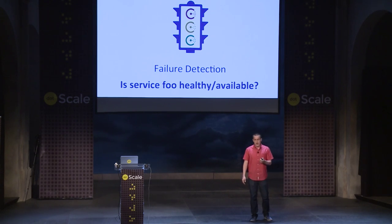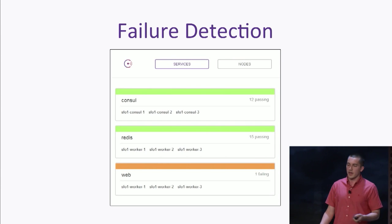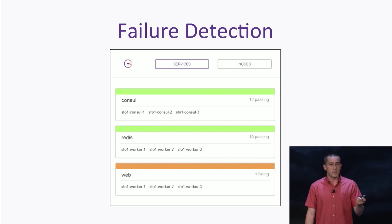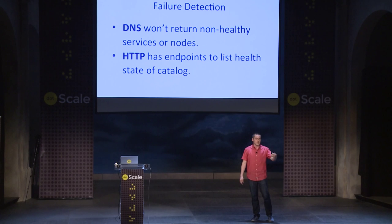Another feature Consul supports is failure detection, answering the question 'is my service healthy and available.' In the Consul web UI you can see, for example, that one of the web service nodes is failing. What's really neat is Consul not only has this information but is smart about it — once a service or the node it's on is failing, the service discovery mechanisms — DNS and HTTP — will not return that address anymore. If other services were already accessing it and it failed, when they remake the DNS query they'll get a healthy node in response.